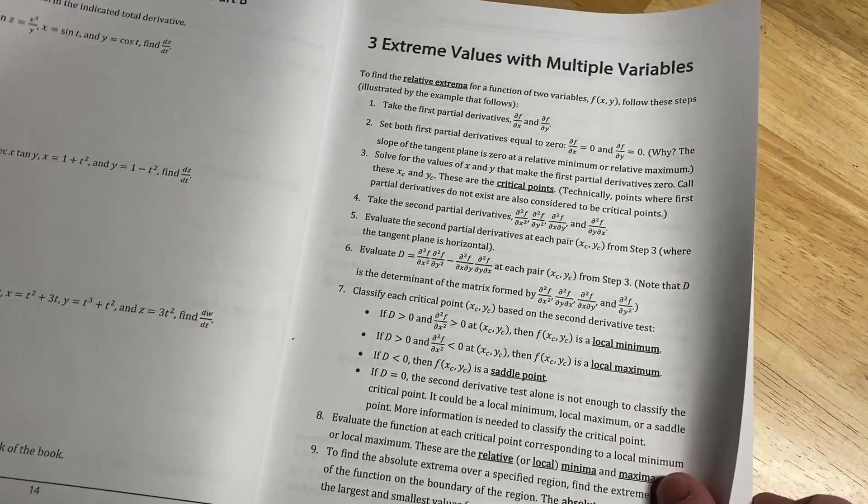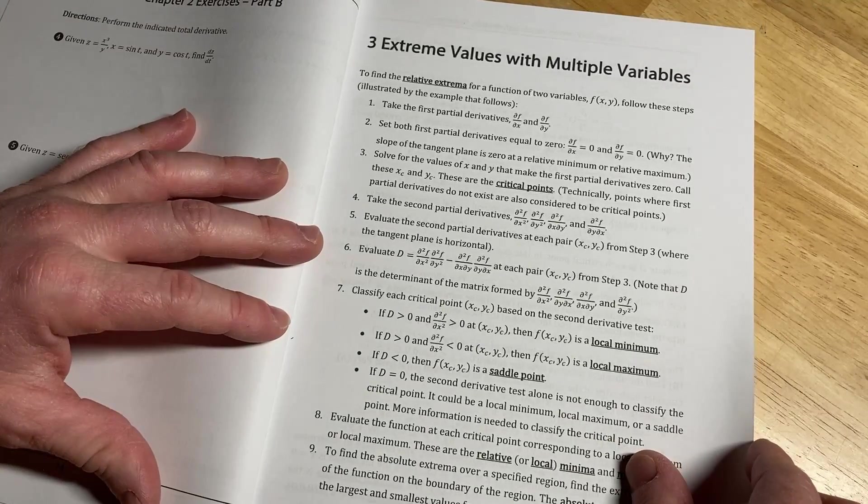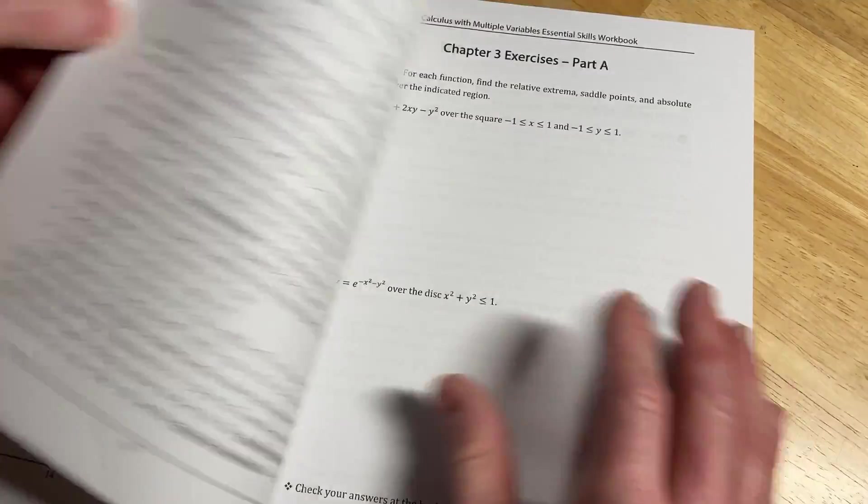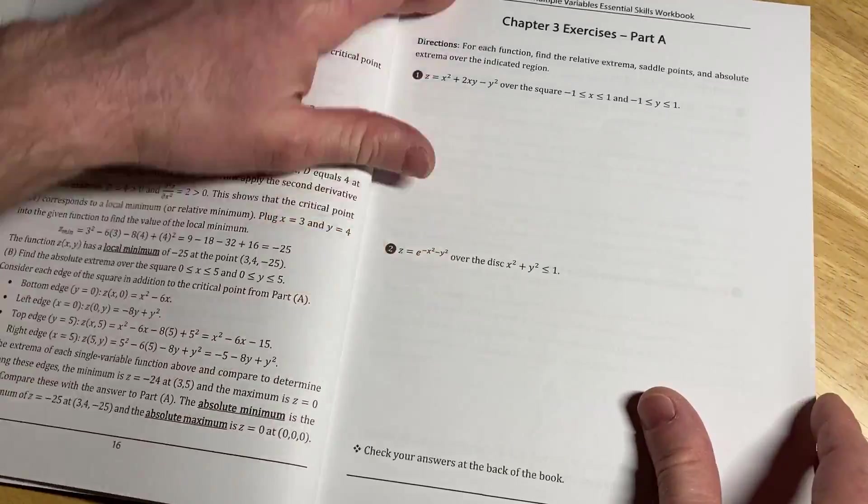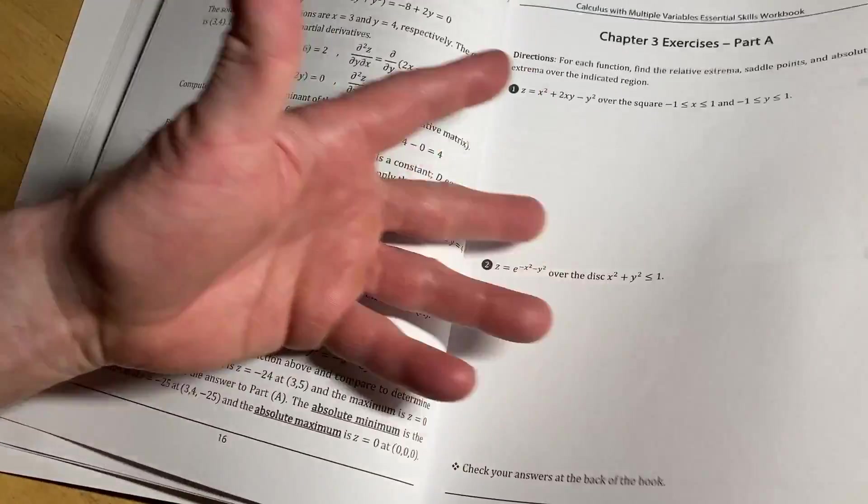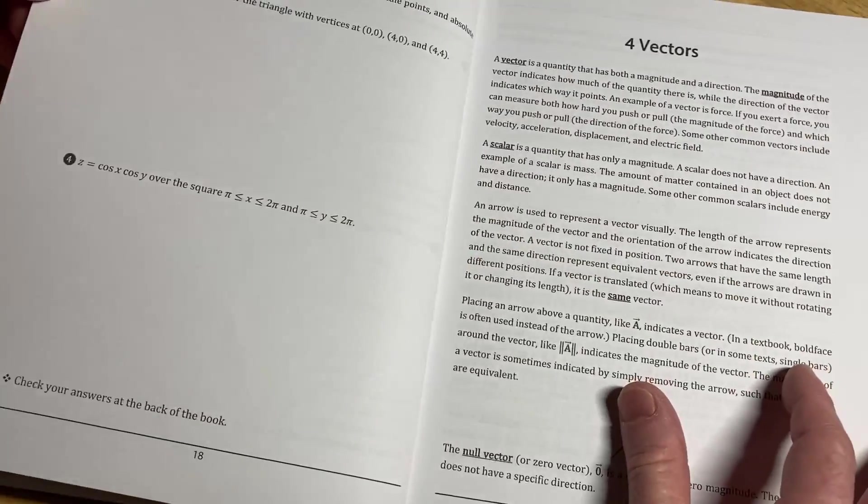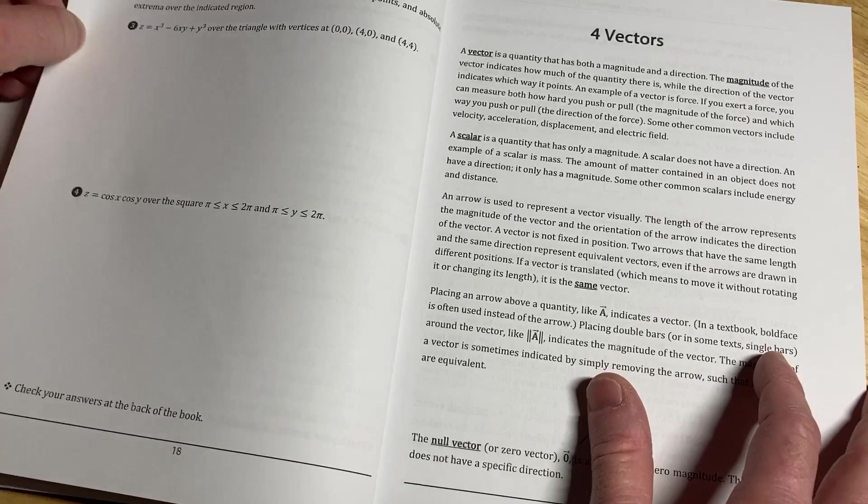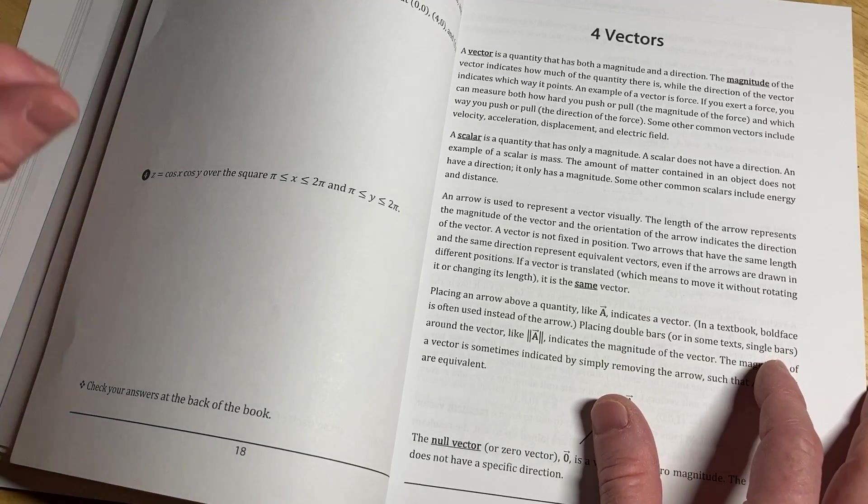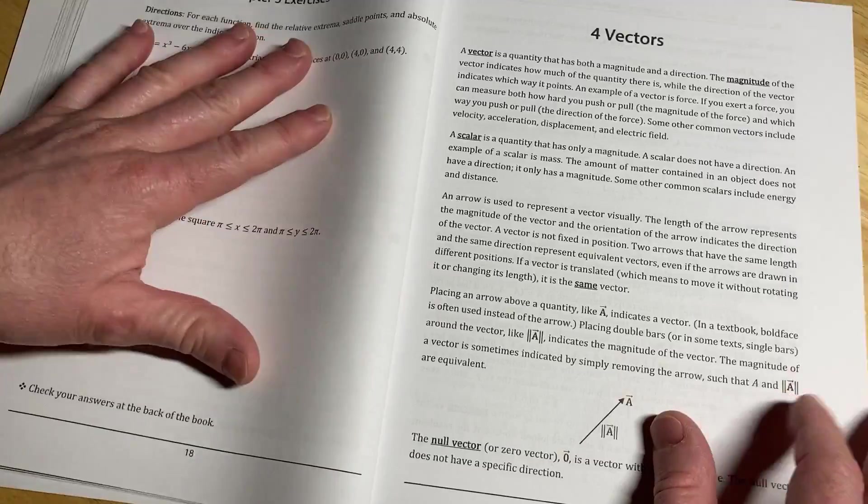And here you have extreme values with multiple variables. Again, another really good place where I feel like the book adds a lot of value. It makes it worth it. And it's pretty short reading, right? It's not like tons of reading. And then you've got some great exercises here. And then two more here. So only four problems, right? But hey, it's better than nothing. This book is super inexpensive. I will try to remember to leave a link in the description of this video to this book in case you want to buy it.